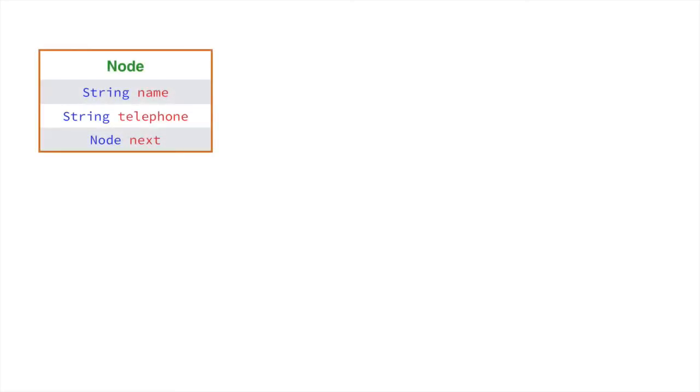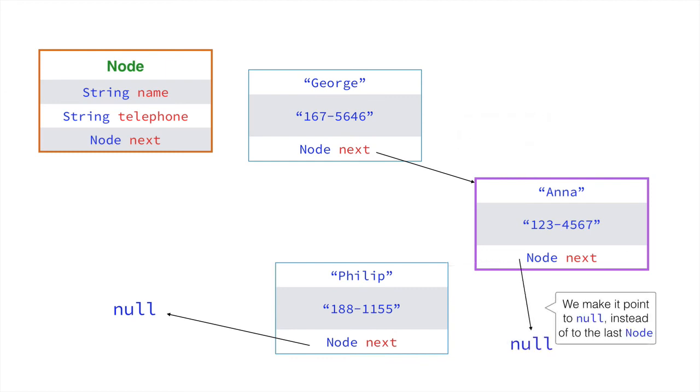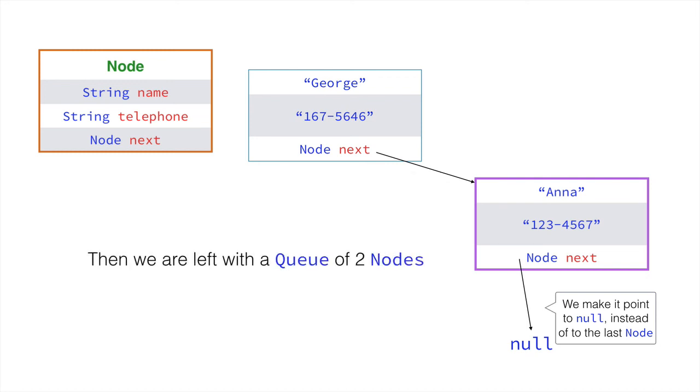So we have our queue, and then we have the first node, the second node, and the third node, then null. First node, second to last node, and the last node. So we go to the second to last node and we make it point to null instead of to the last node. Although we are not explicitly deleting this node because we don't have a way to do that in Java, Java will remove it from memory for us so we don't have to do anything. And eventually we are left with a queue of two nodes.